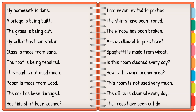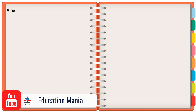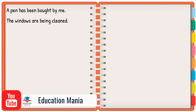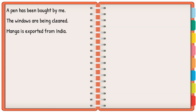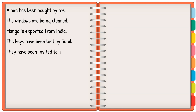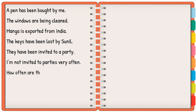'The trees have been cut down.' 'A pen has been bought by me.' 'The windows are being cleaned.' 'Mango is exported from India.' 'The keys have been lost by Sunil.' 'They have been invited to a party.' 'I am not invited to parties very often.' 'How often are these rooms cleaned?' 'The windows are cleaned every week.'